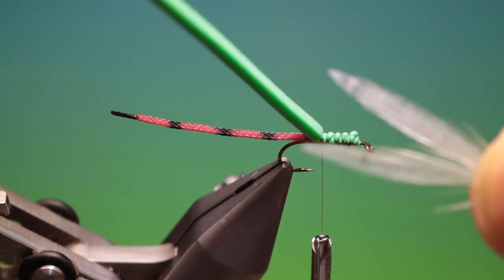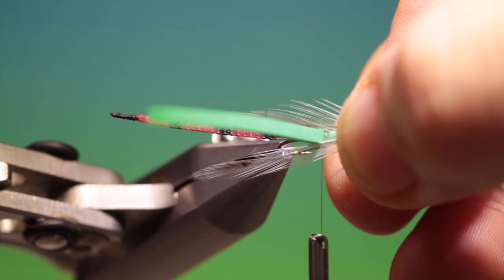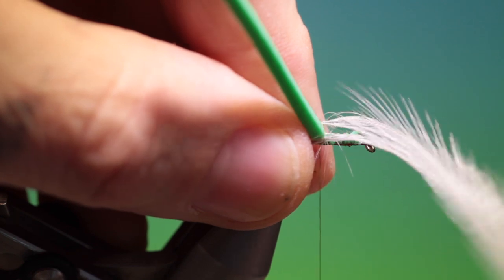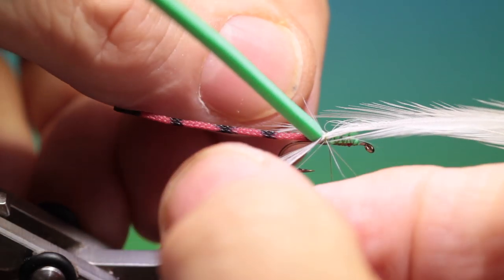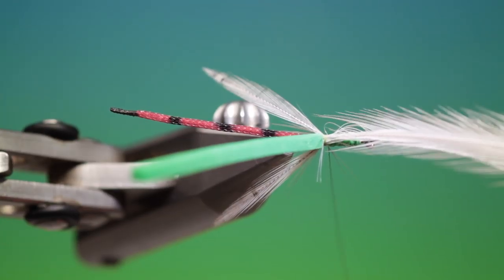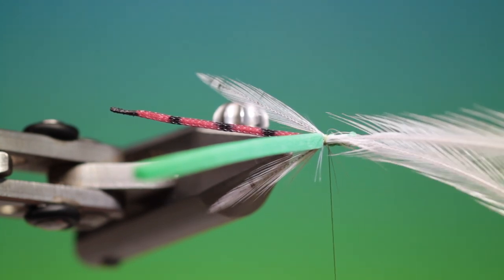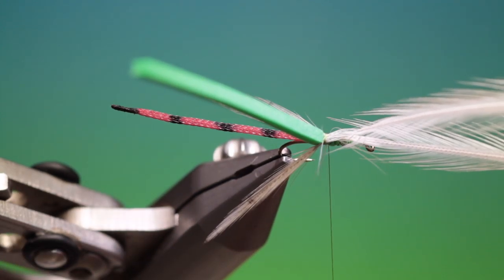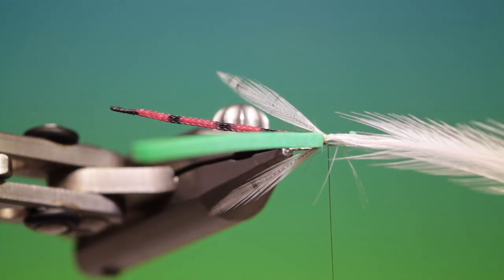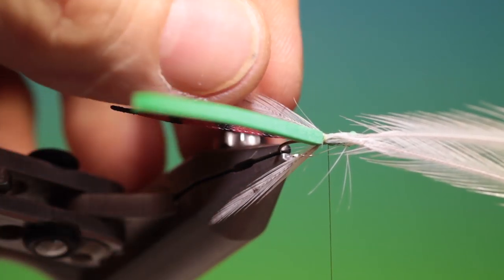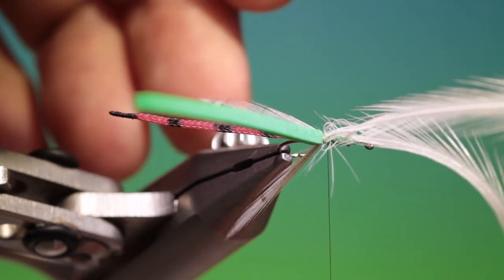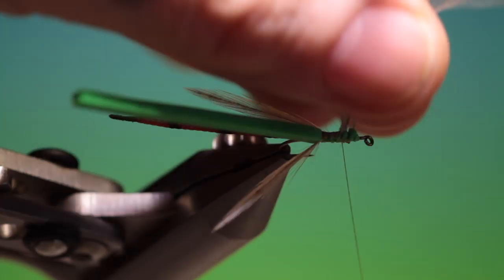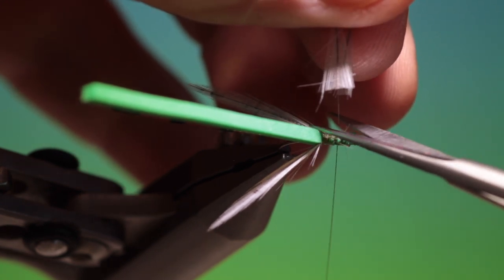We need two light dun wings and we'll just attach those there. All we need to do is hold them and make it just a couple of turns to tack them in and then we can pull them to the correct length.